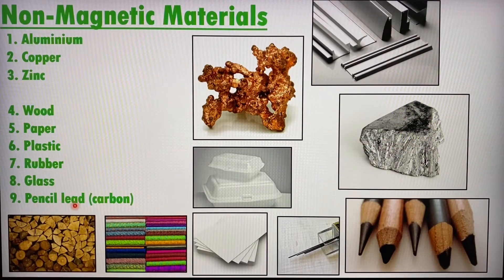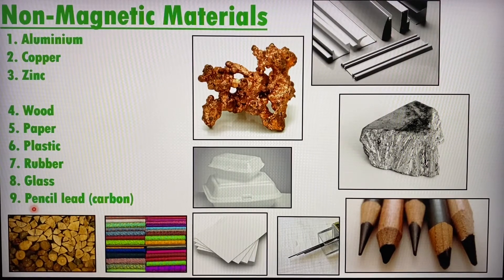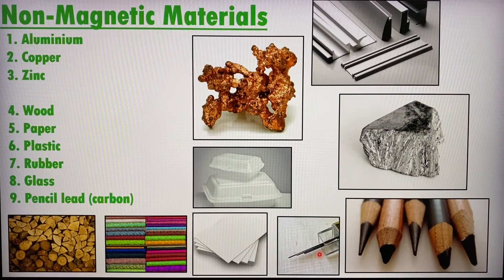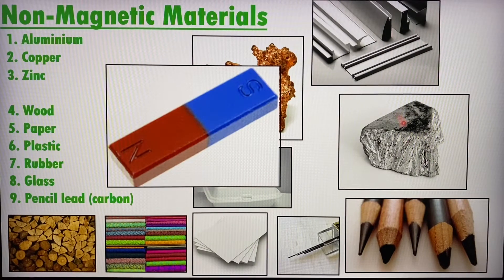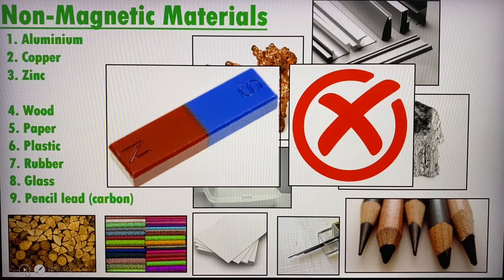Over here we have non-magnetic materials that are also non-metals: wood, paper, plastic, rubber, glass, and pencil lead — or we can call it carbon pencil lead. Almost every year students ask me if carbon is magnetic. To let everyone know, carbon is not even a metal, so it's definitely non-magnetic. Styrofoam is also here because it's a form of plastic and is definitely non-magnetic. If we bring a magnet close to any of these materials, nothing will happen — the magnet will not attract them.